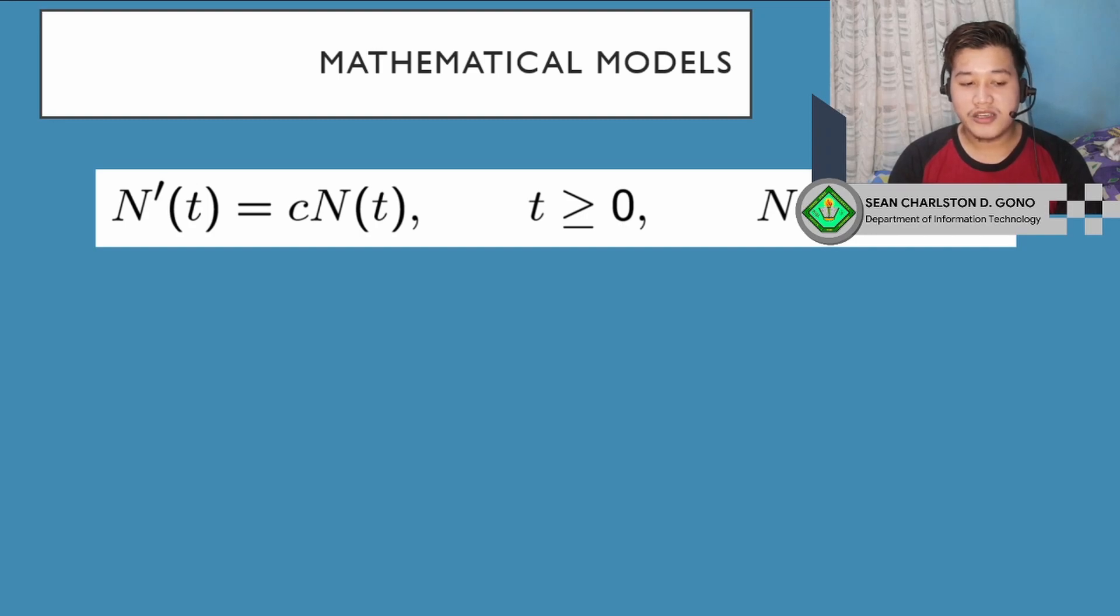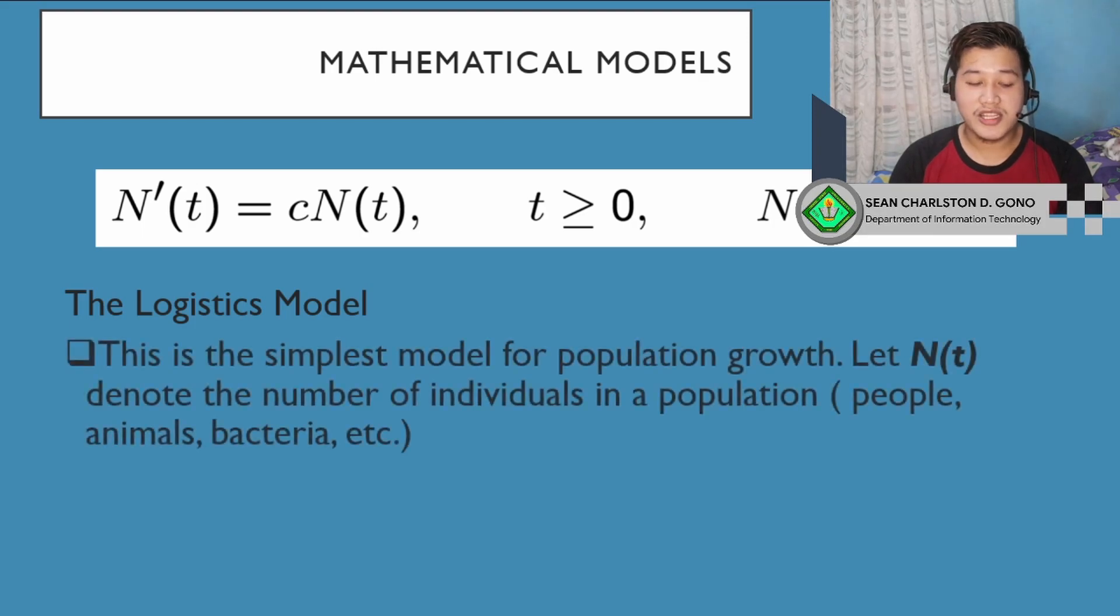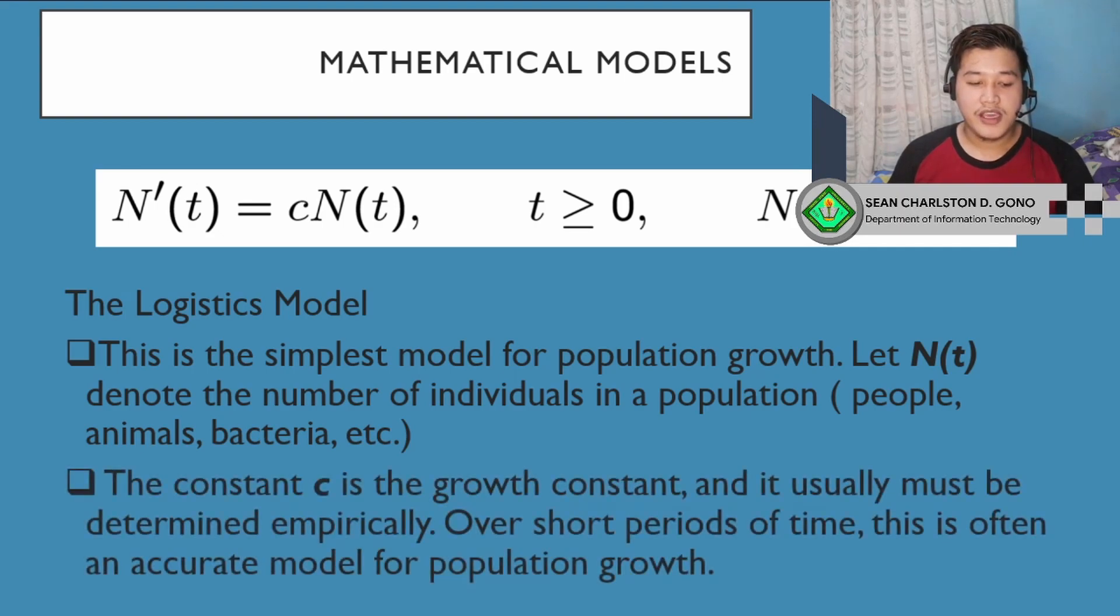You may not be familiar with this equation, but this is the logistics model. The logistics model is a simple model for population growth. We have N(T) here, which denotes the number of individuals in a population. The individuals can be bacteria, animals, people, or whatnot, depending on what you're observing. The constant C is the growth constant, and it's usually determined empirically. Over short periods of time, this is often an accurate model for population growth. Because C is a growth constant, whenever they take a census of a certain population, that number will not change for a short period. For example, if we're observing animals, those animals may reproduce or die. Whenever that happens, the growth constant changes and is unknown until the next census. So the logistic model is accurate at a certain point in time, but not always.